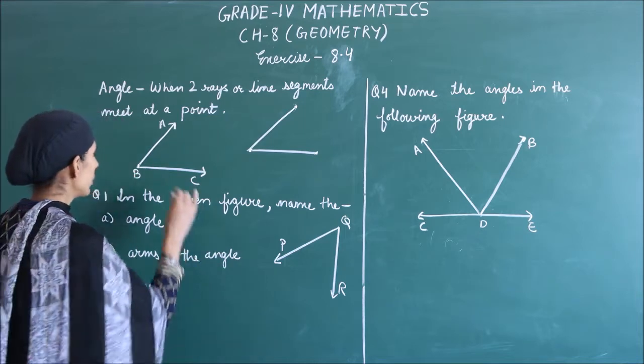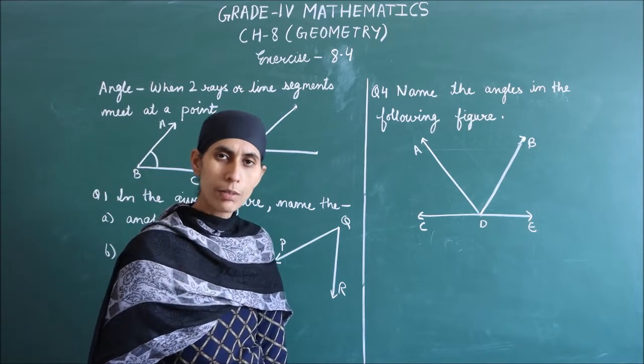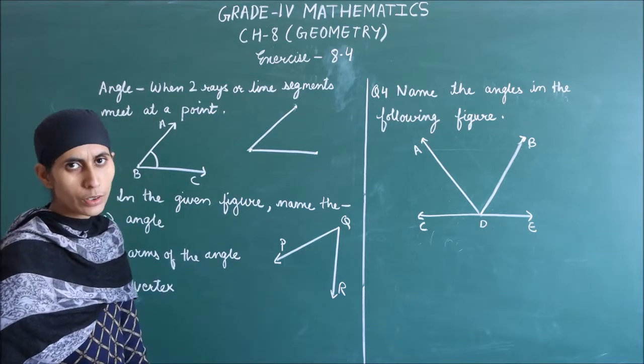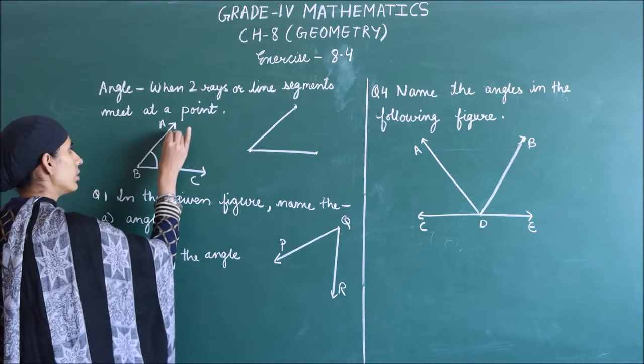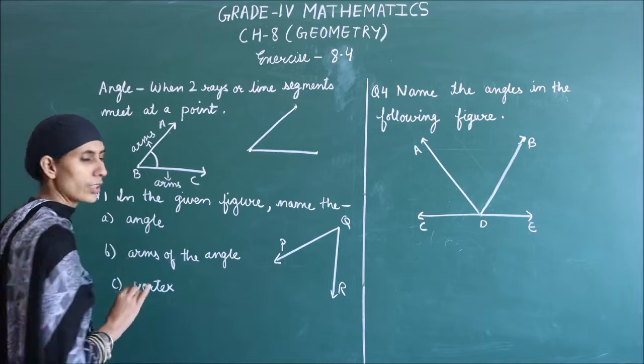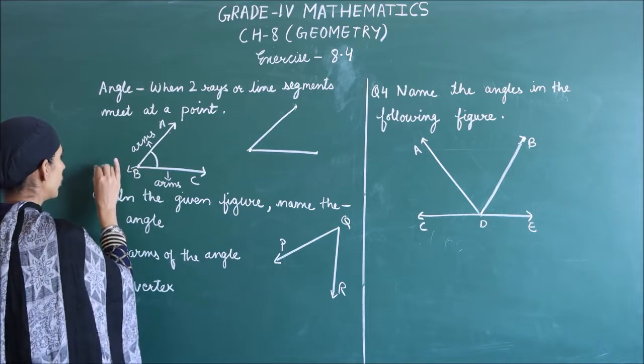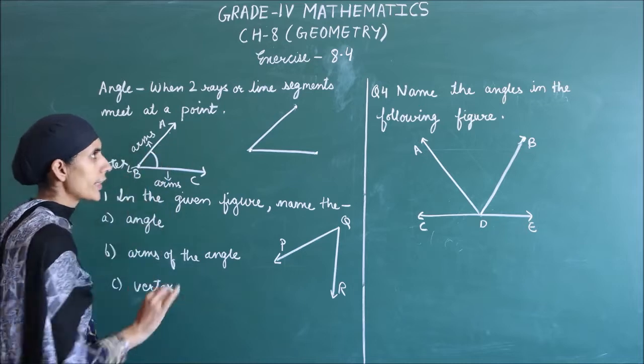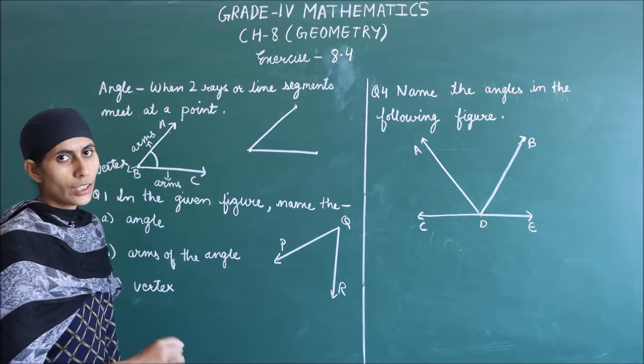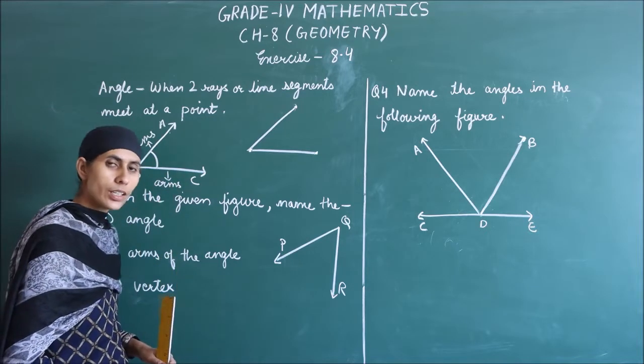When two rays or line segments meet at a point, at one point they meet, then what do they form? An angle. In order to name the angle, we have to understand which parts the angle has. This is the arm, the arms. And where the two rays meet, this is called the vertex. So in the angle, we have arms and vertex.